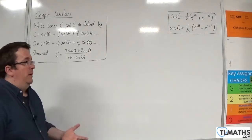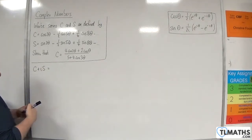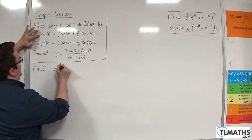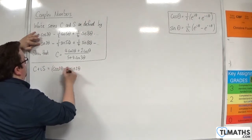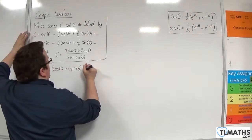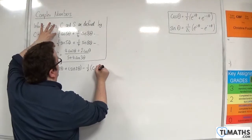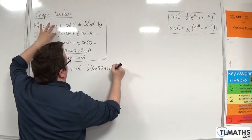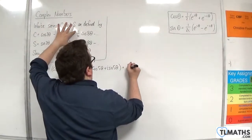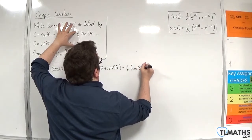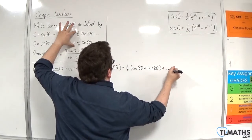So we're going to be working with C plus iS. We would have cosine of 2θ plus i sine 2θ — let's group those two terms together. Then we're going to have, take away one-half of cosine of 5θ plus i sine 5θ, and then plus one-quarter of cosine 8θ plus i sine 8θ, plus etc.